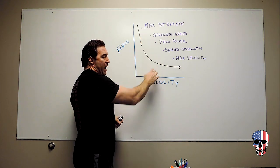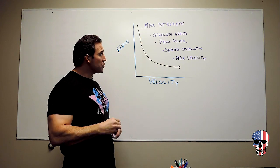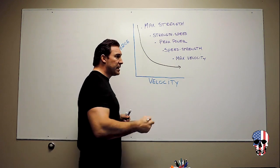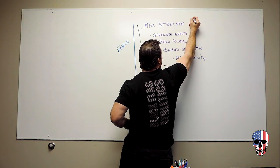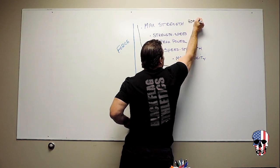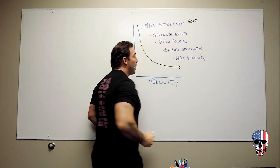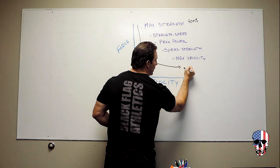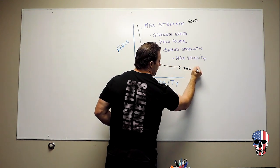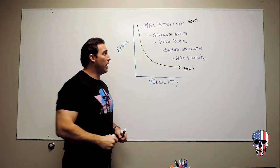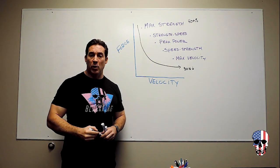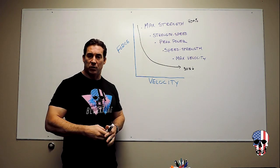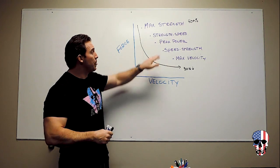Now between maximum strength and maximum velocity, so maximum strength being anything over 90% of what we're doing, and maximum velocity being probably 30% and under, within those spectrums we have a couple of different aspects of strength that we need to work in with each aspect of it.